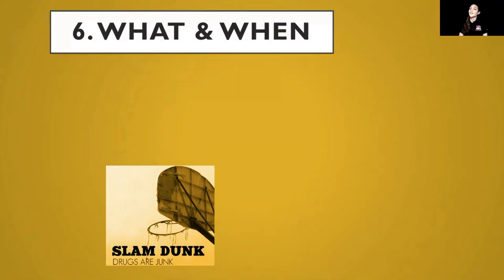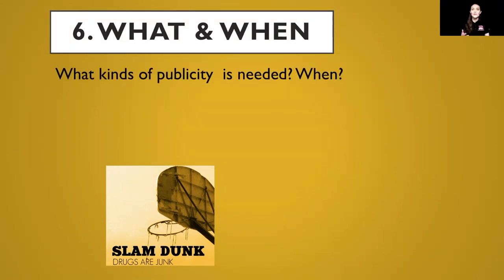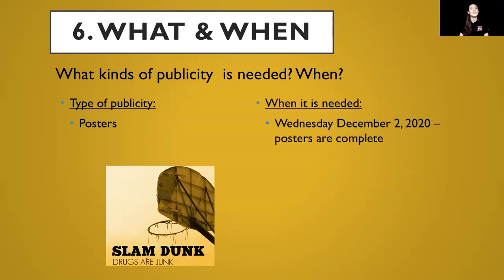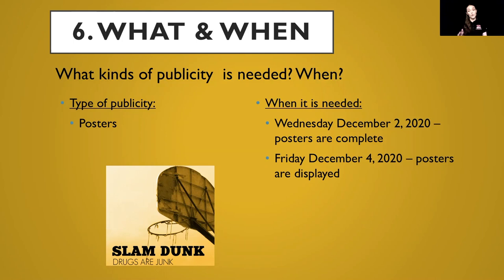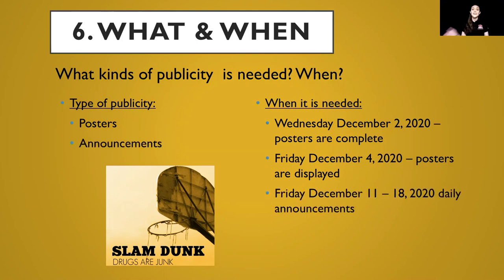Our sixth W focuses on 'what and when' — what kind of publicity is needed and when. For type of publicity, I'm thinking posters. When are they needed? Wednesday, December 2nd — about two weeks prior to our assembly date. We want to make sure the posters are completed, and by Friday December 4th we want to put them up around campus to start advertising. Another type of publicity is announcements — the week prior to our assembly, we can start daily announcements to bring awareness and let the whole campus get excited in anticipation for the assembly.